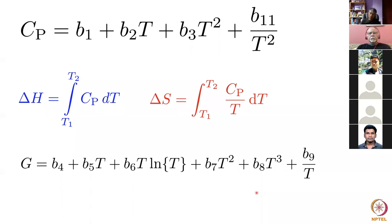The models we have considered so far are just too simple to represent the complexity of real data, and that is why we use these empirical polynomials. The computer can access thermodynamic data from these equations and their coefficients.